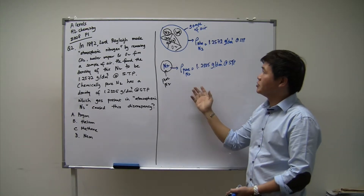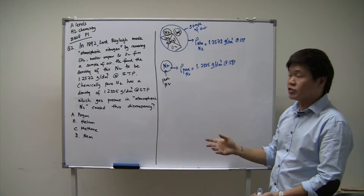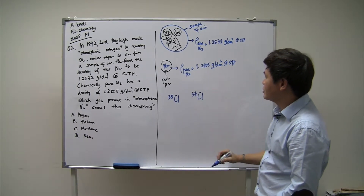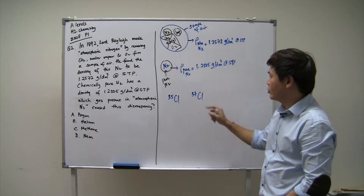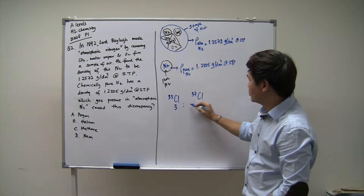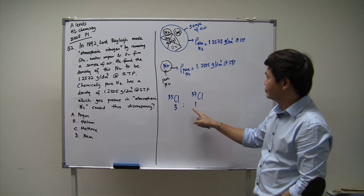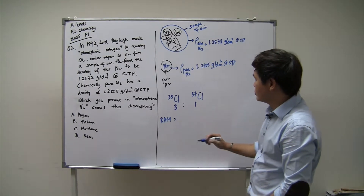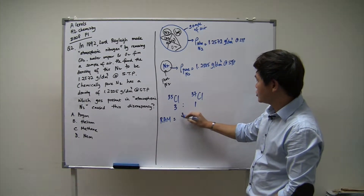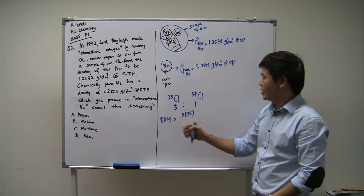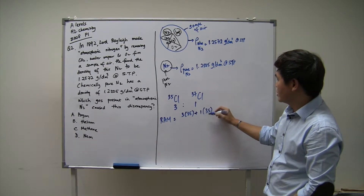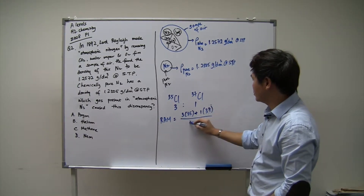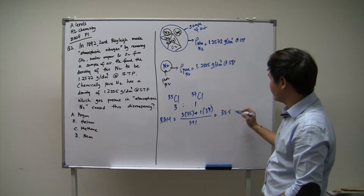To answer this question, the concept we're going to use is very similar to one learned in first year. Recall: if there are two different isotopes of chlorine — chlorine 35 and chlorine 37, the two most common isotopes — and the abundance ratio between them is 3 to 1, the question is how to find the relative atomic mass of chlorine. The technique we use is: take the abundance 3, multiplied by the mass number of chlorine-35, plus 1 times the mass number of chlorine-37, and divide by the total abundance, giving 35.5 — what we see in our data booklet today.